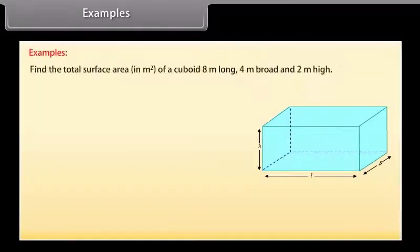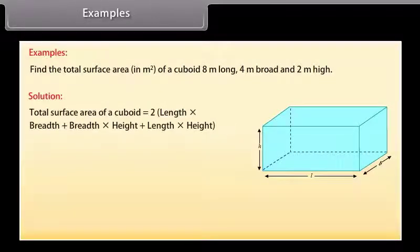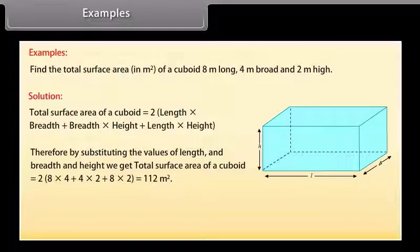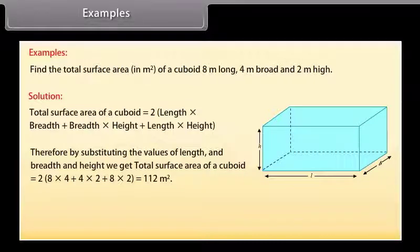Example: Find the total surface area in meter square of a cuboid 8 meters long, 4 meters broad, and 2 meters high. Solution: We know that the total surface area of a cuboid = 2(LB + BH + LH). Substituting the values, total surface area = 2(8×4 + 4×2 + 8×2) = 112 meter square.